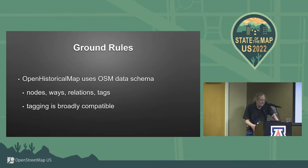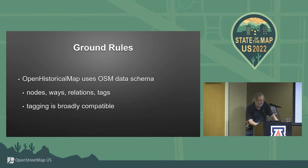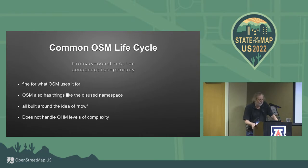The ground rules are that Open Historical Map uses the OSM data schema, and that's not going to change. So we have nodes, ways, relations, and tags, and our tagging is broadly compatible. There are sound reasons for these ground rules — they're not things that are going to be disrupted. There's not a compelling motivation for it right now.